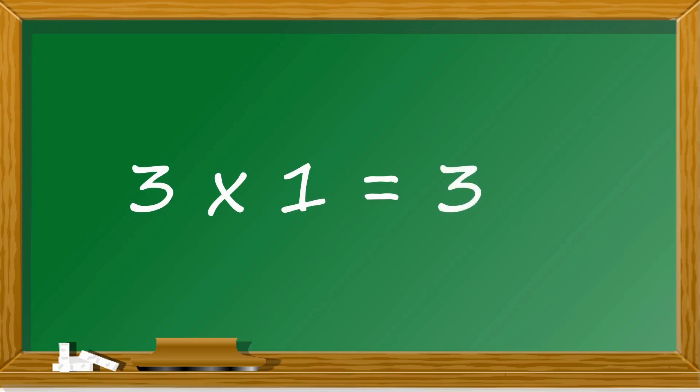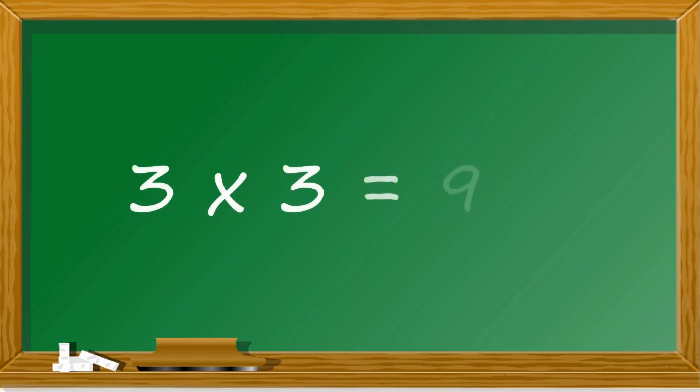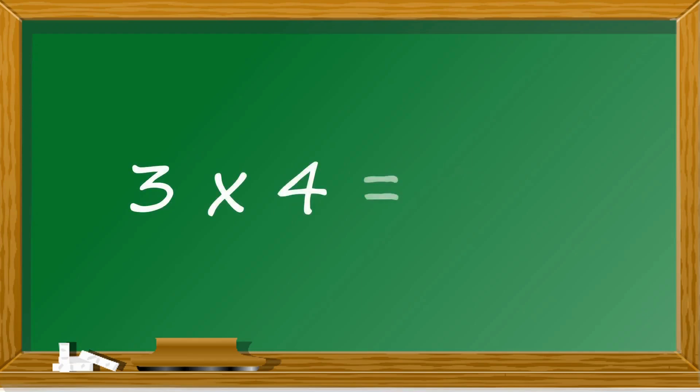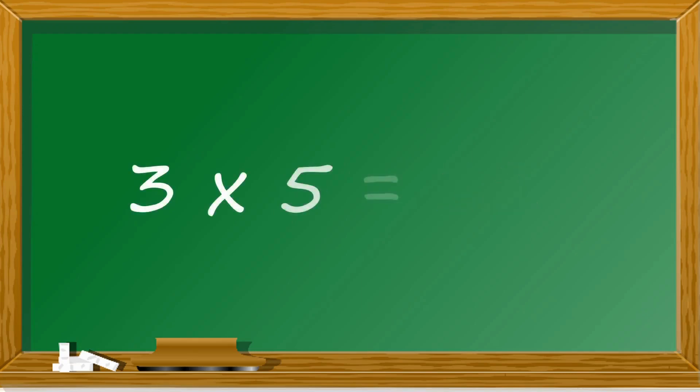3 1s are 3, 3 2s are 6, 3 3s are 9, 3 4s are 12, 3 5s are 15,